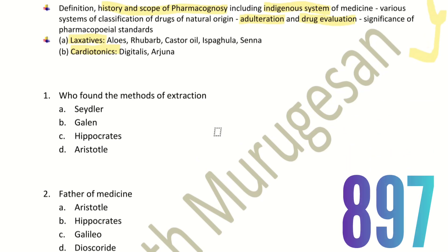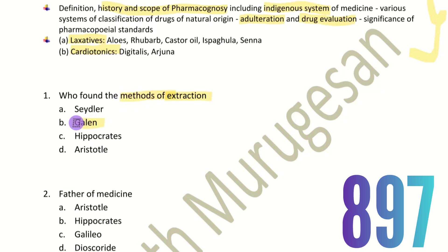First question: Who found the methods of extraction? The choices are Siddler, Gallen, Hippocrates, and Aristotle. The right answer is option B — Gallen.